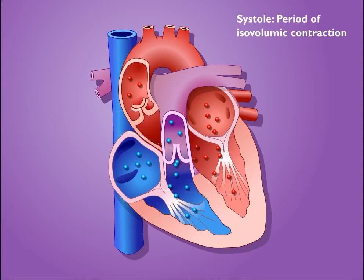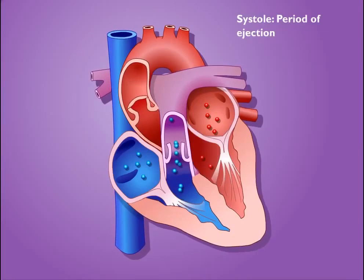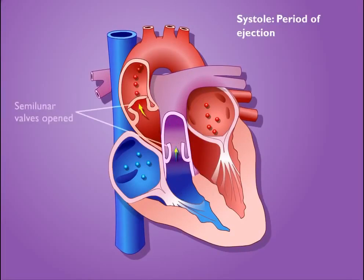Continued ventricular contraction increases pressure in the ventricles above the pressure in the aorta and pulmonary trunk, causing the semilunar valves to open.